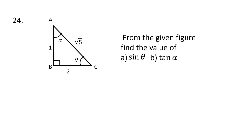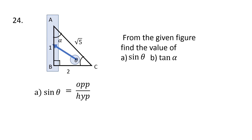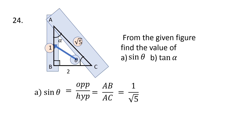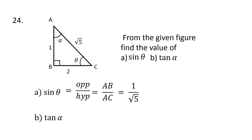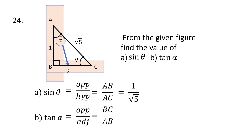From the given figure, find the value of (a) sin theta and (b) tan alpha. For sin theta: sin theta equals opposite over hypotenuse. Here angle theta has AB as the opposite side and AC as the hypotenuse. AB is 1 and AC is root 5, so sin theta equals 1 by root 5. For tan alpha: tan equals opposite over adjacent. Angle alpha has BC as the opposite side and AB as the adjacent side. BC is 2 and AB is 1, so tan alpha equals 2 by 1, that is 2.